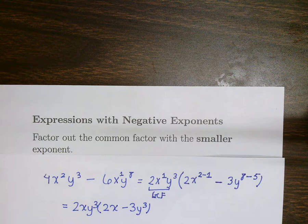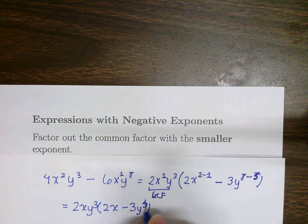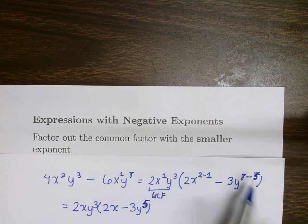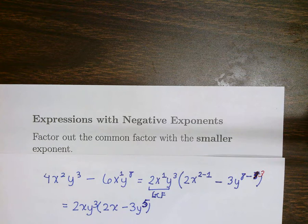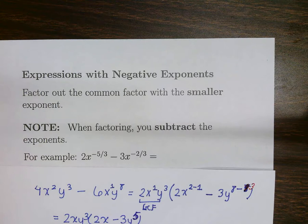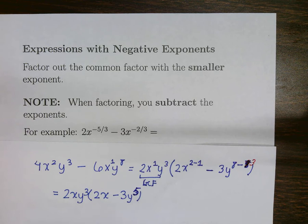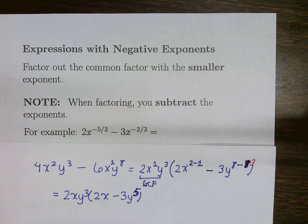I pulled out a y cubed, so I subtracted 3, leaving me with 3y to the fifth. Now we're doing exactly the same thing when we're dealing with negative exponents — exactly the same process. If you're confused and that looks kind of mysterious, just remember you've done it before. We're just doing it with negative exponents.